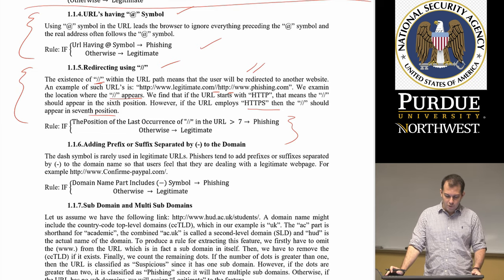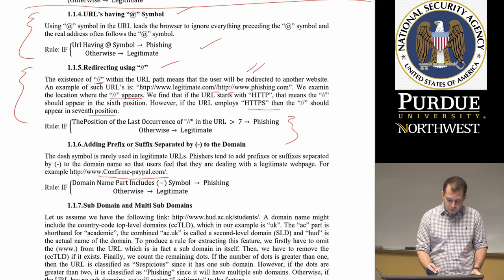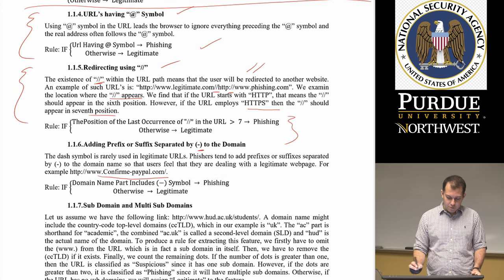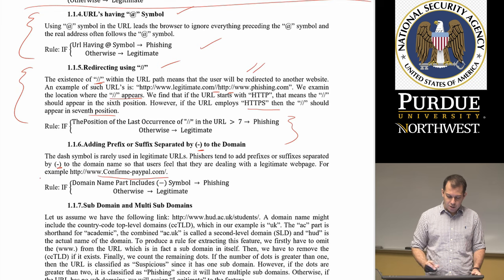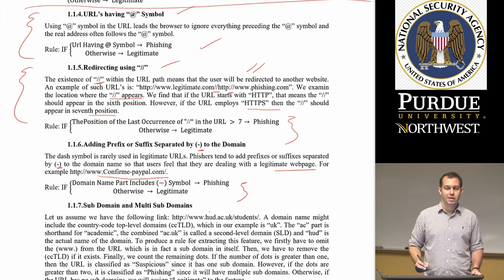Another suspicious feature is adding a prefix or suffix separated by a dash to the domain name. The dash symbol is rarely used in legitimate URLs, and phishers tend to add prefixes or suffixes separated by a dash to make the user feel they are dealing with a legitimate website. This is another feature they use.